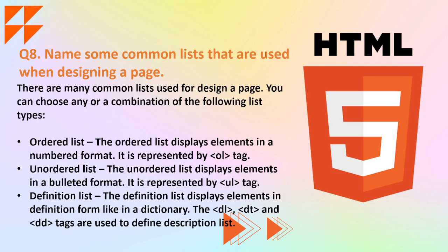Moving on to the next question: name some common lists used when designing a page. There are many common list types you can choose from. The ordered list displays elements in a numbered format and is represented by the ol tag. The unordered list displays elements in a bulleted format and is represented by the ul tag. The definition list displays elements in definition form like a dictionary, using the dl, dt, and dd tags — where dl stands for definition list, dt for definition term, and so on.